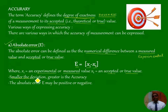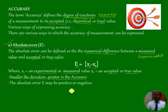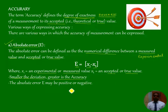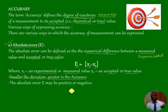Smaller the deviation, greater is the accuracy. If you have a low deviation — that means if you are getting multiple values from multiple experiments or measurements, and the results are more close to one another — then it is called a small deviation, and it is always considered as more accurate.